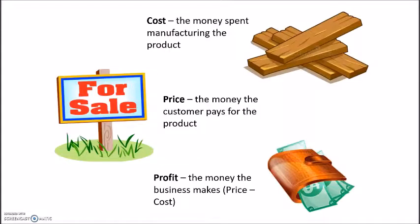So I've done this for business. Now cost - I need to somehow remember that the cost is the money spent on making the product. So I've got the planks of wood there to symbolize the materials that we would need to buy. The price is how much the customer pays for the product. So I've got that for sale sign.